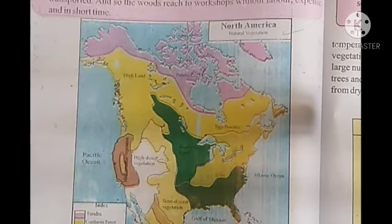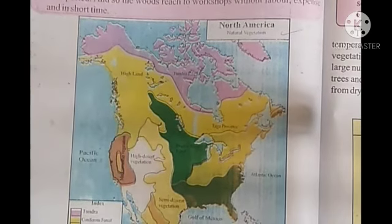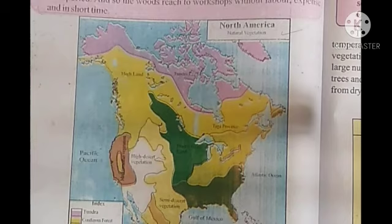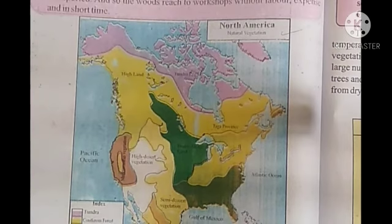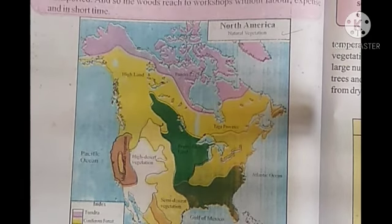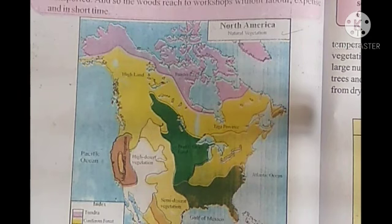You have to read the map to identify where there is highland vegetation, semi-desert vegetation, and high desert vegetation. These are all shown in different colours, including areas in the Gulf of Mexico. If you have any doubt, you can ask in the doubt class. Students, you have to read the chapter deeply, carefully, and word by word. I will give you only the summary. More in the next video.